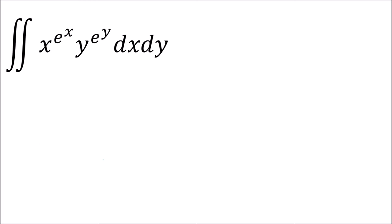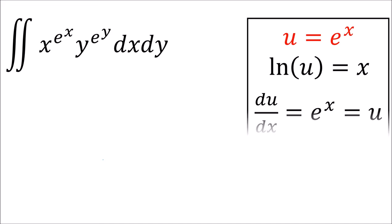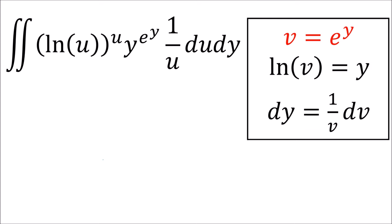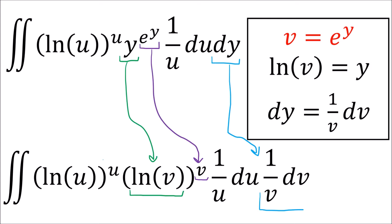Okay, so next we're just going to do a straightforward substitution, where u equals e to the x. So x equals ln u, e to the x equals u, and dx equals 1 over u du. And this helps reduce the double exponential to just 1. And we can do something similar for y using v equals e to the y.